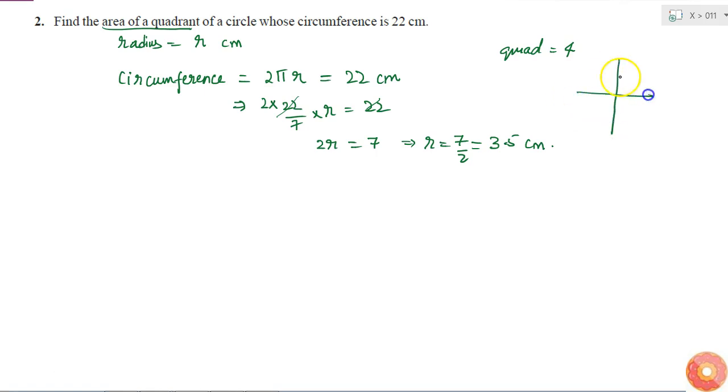That means if I consider my circle and I divide it into 4 parts. So let us say this is my center. So they want the area of one part of the circle. So that will be simply 1 fourth of the total area of the circle.